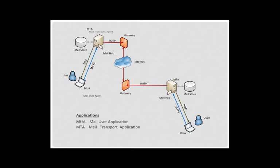To quickly review applications and protocols: the sender of an email uses an application known as the MUA, or Mail User Agent, to create and send an email off to a Mail Hub. The Mail Hub uses an application known as the MTA, or Mail Transport Agent, to receive, store if necessary, and then forward the email to the next hop on the way to its final destination, the recipient's Mail Box.